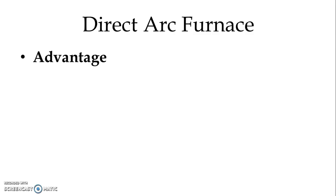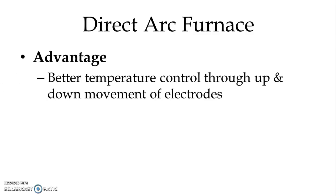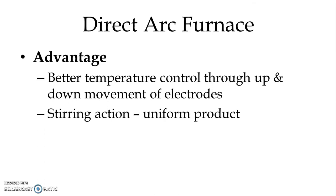Arc is produced in the charge itself and that is why more heat and high temperature is produced in the direct type of Arc Furnace. Advantages of Direct Arc Furnace: better temperature control is possible through up and down movement of the electrodes. Electrodes can be moved vertically to adjust the distance between the charge and electrodes. We can short-circuit the electrodes with the charge and then move them slightly upward to maintain the arc between electrodes and charge. Because current passes through the charge itself, stirring action is possible, and that is why we get a uniform product.